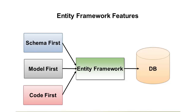Code first is actually my preference nowadays because it's a very code-centric approach. It allows us to write classes like we normally would, with simple properties — POCO classes, plain old CLR objects — that we can then persist to a database using something called a DbContext. With this model, we write custom C# or VB classes, and then use those classes to automatically generate the database and tables for us.